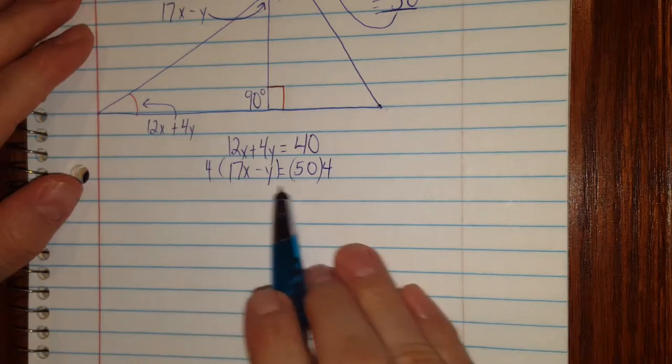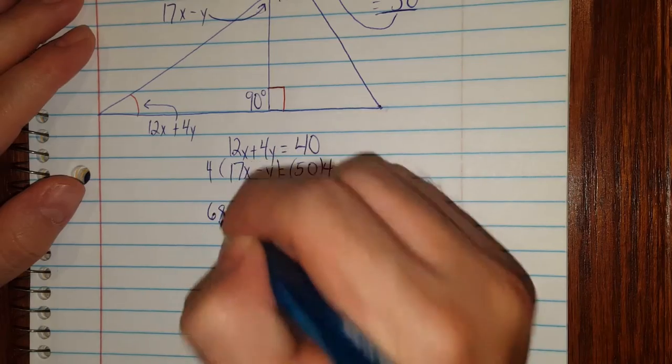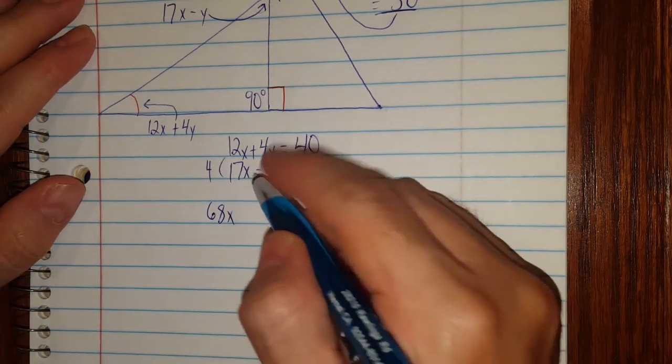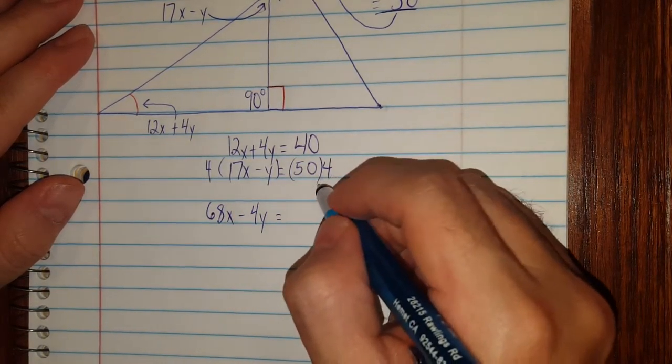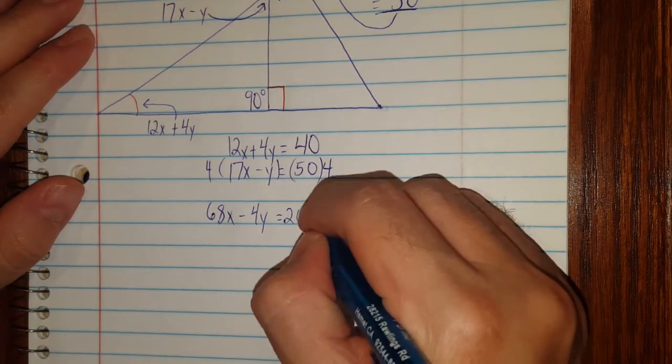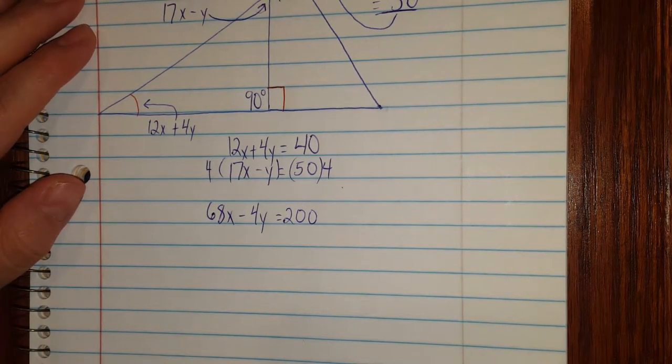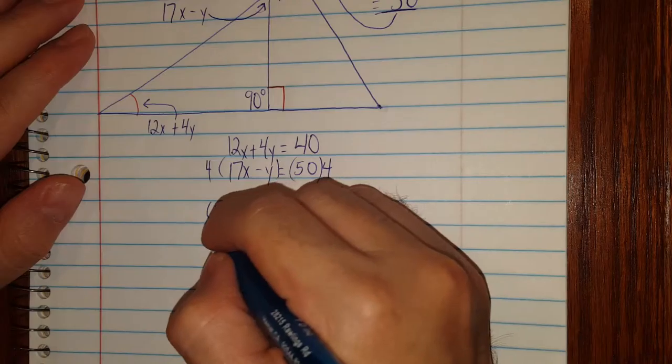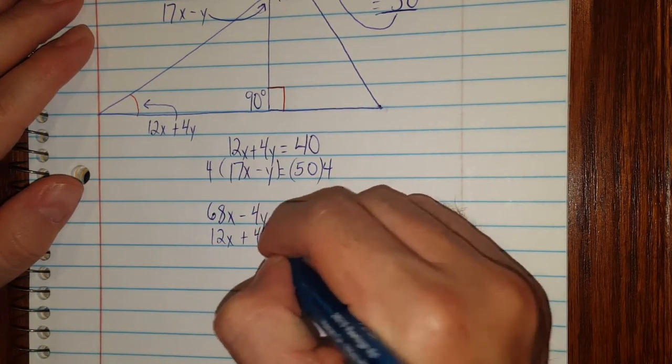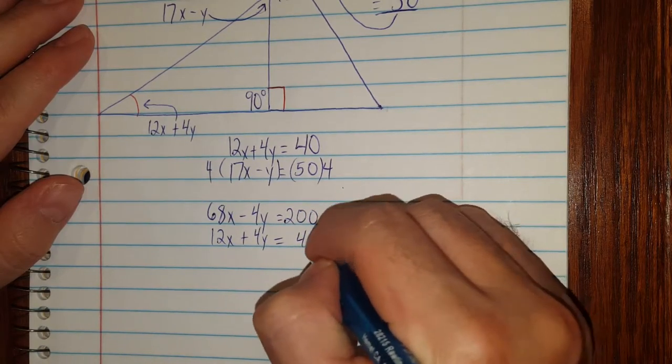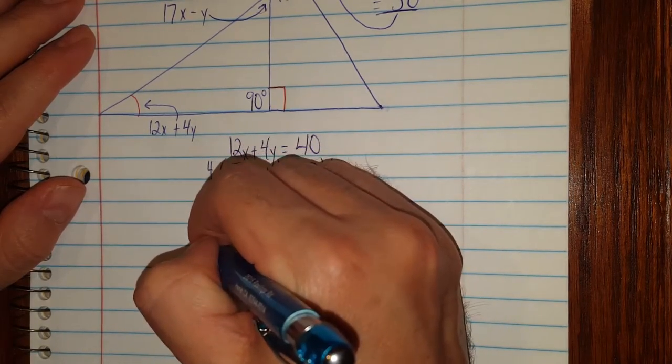Okay, I'm going to go ahead and write this equation first. 4 times 17x is 68x, 4 times negative y is minus 4y, 50 times 4, well 5 times 4 is 20 and I have an extra 0 here, so I'll just throw on the extra 0, 200. Now I don't need to do anything else to this original top equation here. I just have to rewrite it down here.